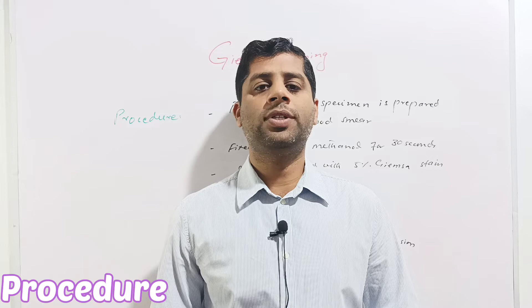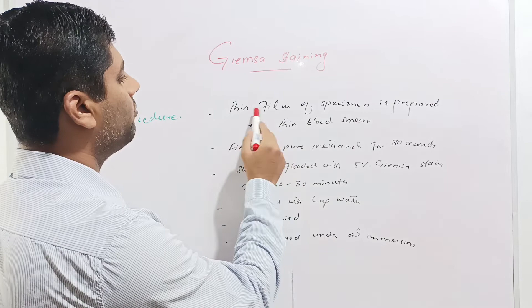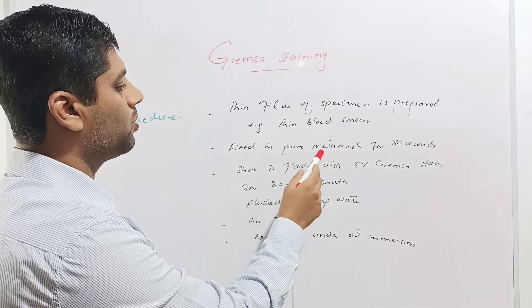Now we'll discuss the procedure of Giemsa staining, the most important part of our lecture. Giemsa stain is a very simple procedure. First of all, thin film of the specimen is prepared on the slide, for example thin blood smear. Then the slide is fixed with pure methanol for 30 seconds. Ethanol can also be used instead of methanol.